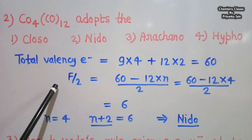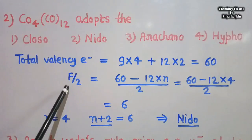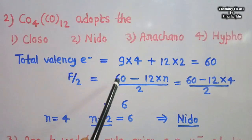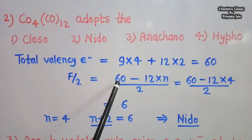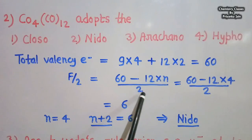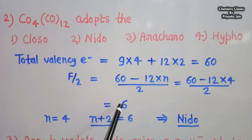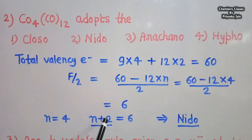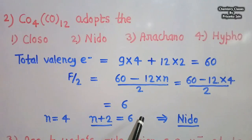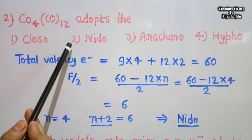For transition metals, the number of skeletal electron pairs is: SEP = (total valence electrons − 12n) / 2. So SEP = (60 − 12×4) / 2 = 6 pairs. The number of vertices is 4 (four metal ions). Since 6 = n + 2, this belongs to the nido family. Co4(CO)12 has a nido structure — option 2 is correct.